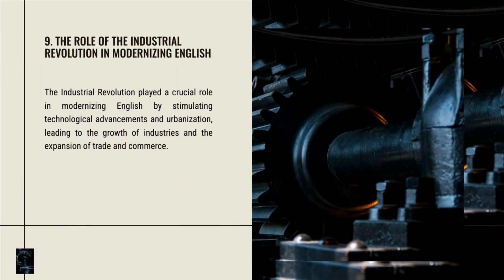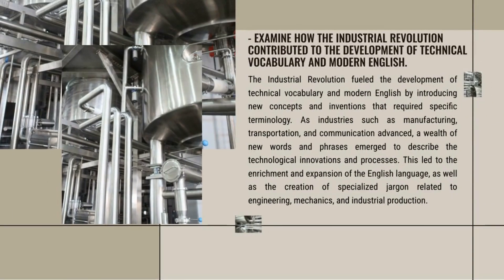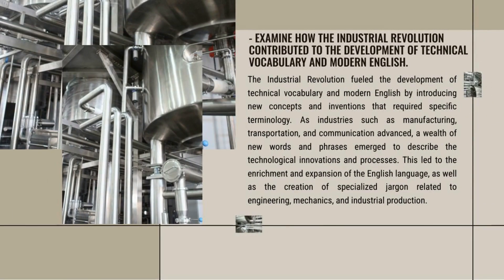The Industrial Revolution fuelled the development of technical vocabulary and modern English by introducing new concepts and inventions that required specific terminology. As industries such as manufacturing, transportation, and communication advanced, a wealth of new words and phrases emerged, leading to the enrichment of the English language and the creation of specialised jargon related to engineering, mechanics, and industrial production.